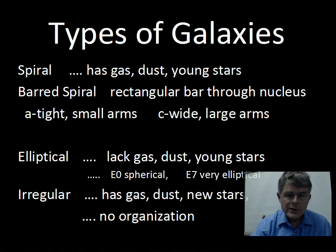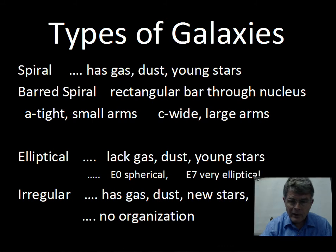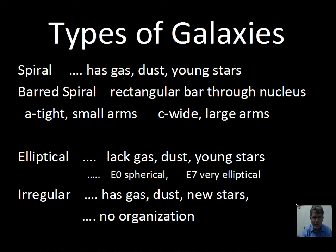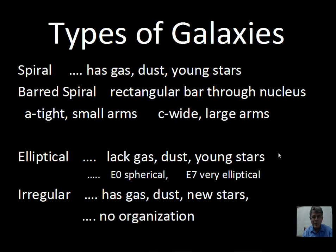This video will discuss the types of galaxies and just a little bit at the end on distances to galaxies. As we investigate the universe, we take photographs. It's really tough with visual observations to do much detail of the galaxies because there's little light. But with photographs we can clearly identify four types of galaxies — and there are more, but these are the four major types I will discuss.